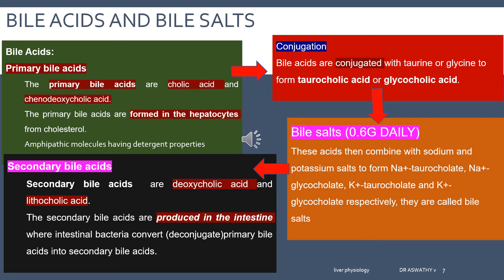Next is the formation of bile acids and bile salts — a very important exam question. Bile acids are generated by the hepatocytes. The precursor molecules of these bile acids are cholesterol. You eat cholesterol-rich foods, or the liver synthesizes cholesterol through fat metabolism. This cholesterol is acted upon by hepatocytes and converted into primary bile acids.